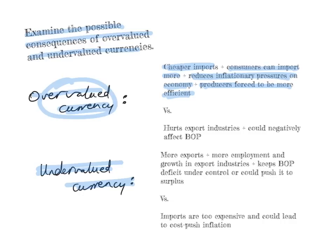The trade-off is that an overvalued currency hurts export industries. Your export industries may struggle and it could negatively affect the balance of payments. If the economy is importing too much and not exporting enough, the balance of payments deficit could get worse — you'll understand this more when we study the balance of payments topic.